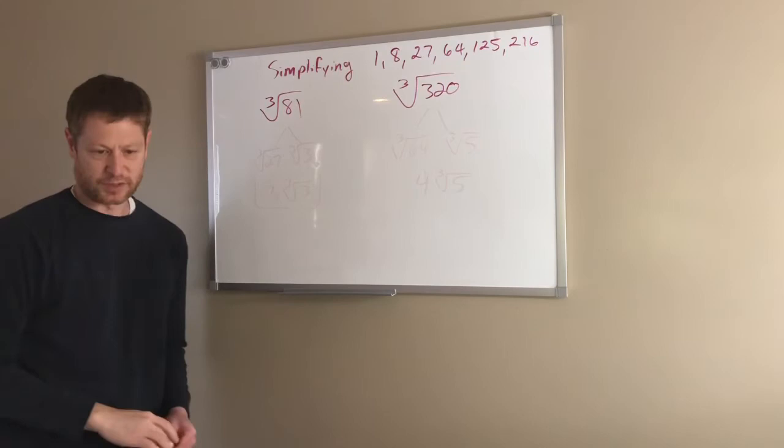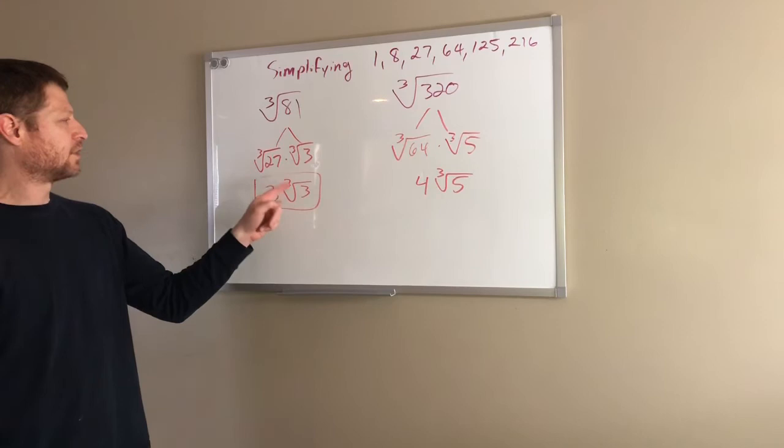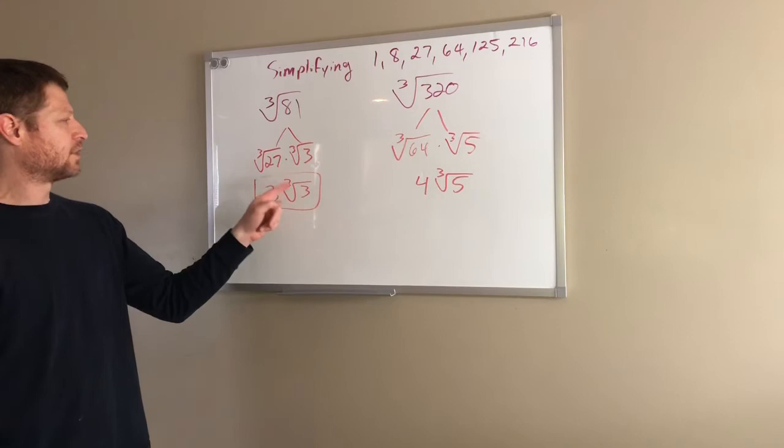So for the cube root of 81, you should have gotten 3 times the cube root of 3 as a final answer, because it splits into the cube root of 27 times the cube root of 3. For the cube root of 320, you should have split it down into cube root of 64 times the cube root of 5, and had a final answer of 4 cube roots of 5.